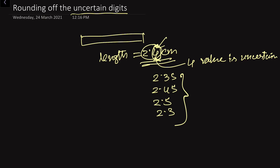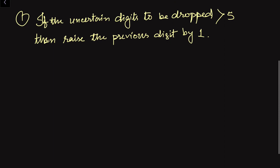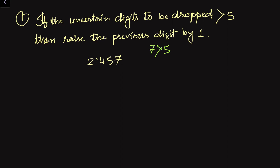So, rounding of the uncertain digits — how we can round off? There are basically three cases. In the first case, if the uncertain digit to be dropped is greater than 5, then we have to raise the previous digit by one. Let us see one example: suppose we have 2.457 and we want to drop the 7. We can see this 7 is greater than 5, so this condition is fulfilled.